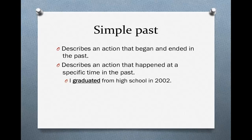First, the simple past. This is a tense you are already very familiar with. The simple past describes an action that began in the past and ended in the past — it is completely finished. It also usually describes an action that happened at a specific time in the past. For instance, I graduated from high school in 2002. We know when it happened — it was in 2002 — so we use the simple past.